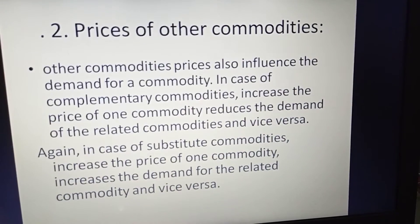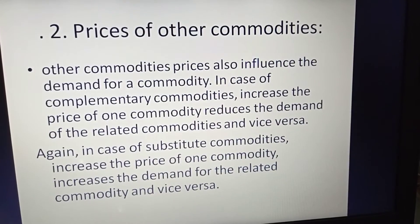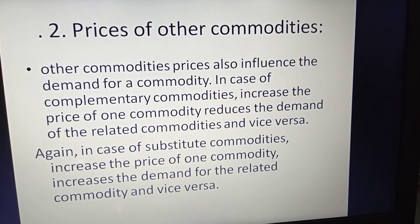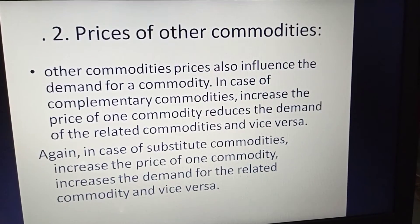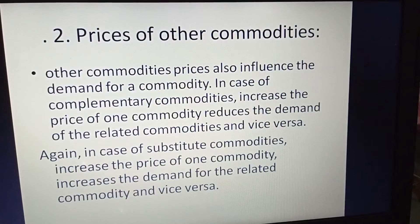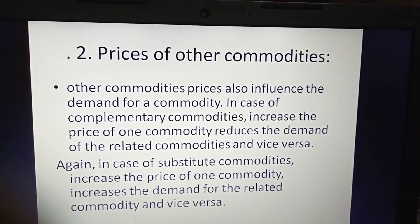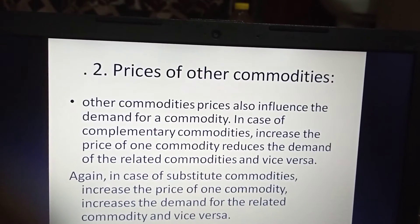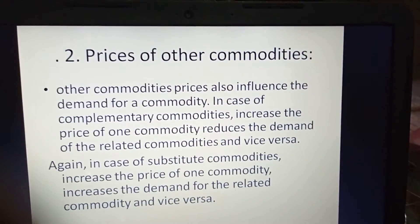There are also unrelated commodities, such as a refrigerator and a bicycle. A change in the price of one will not affect the quantity demanded of the other. That means a price change in the refrigerator does not affect the demand for the bicycle.